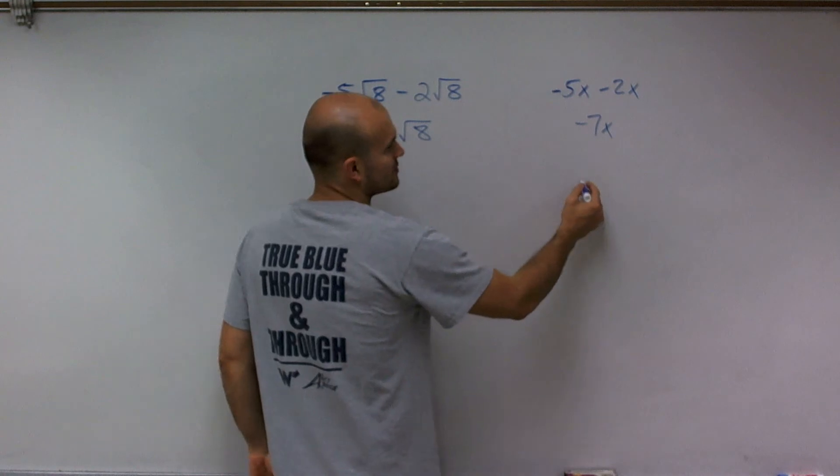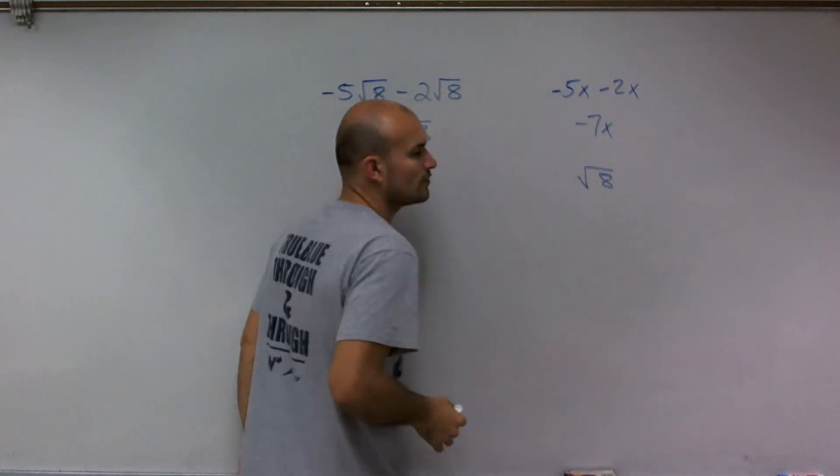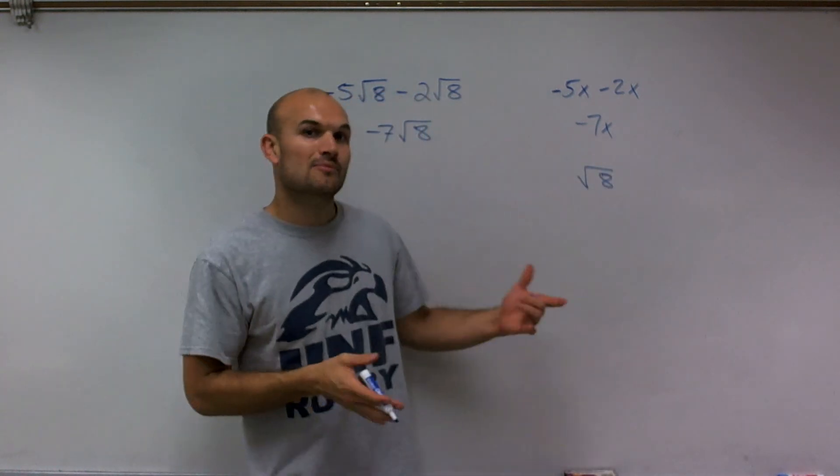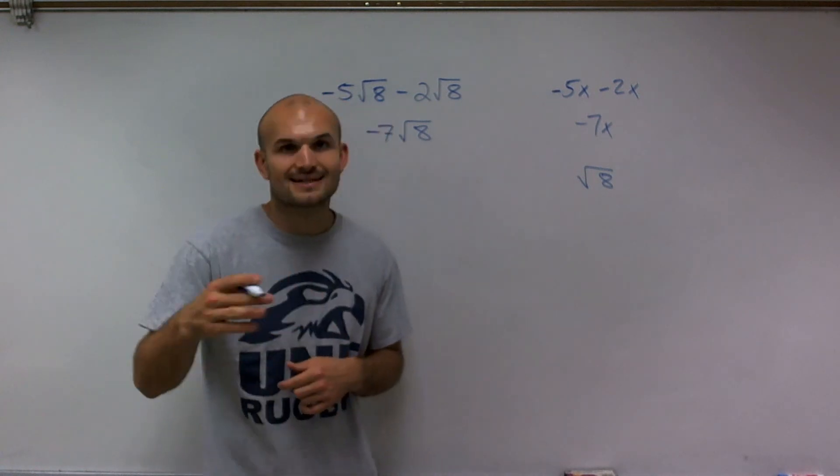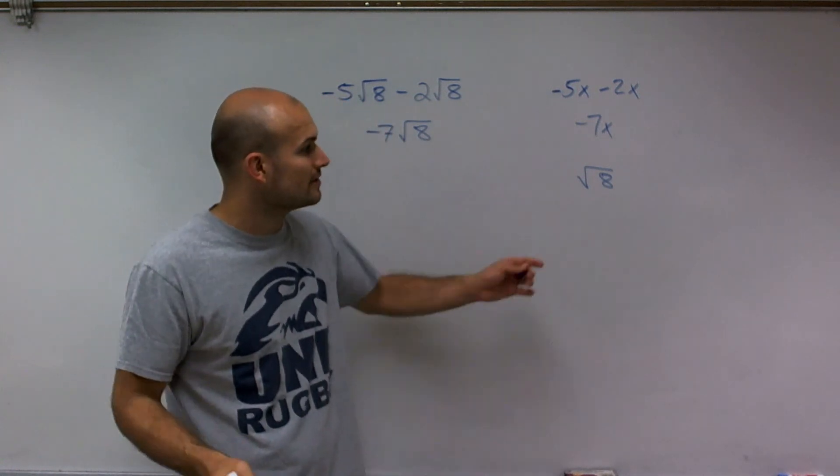With going through simplifying the square root of 8, if we were to plug it in our calculator, we get an approximation of 2.8284271 and it goes on and on forever. However, one thing I can do is rewrite this.